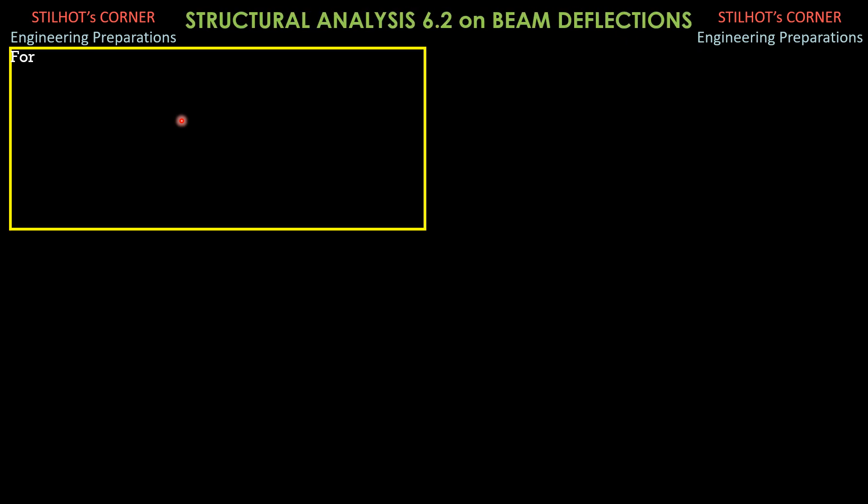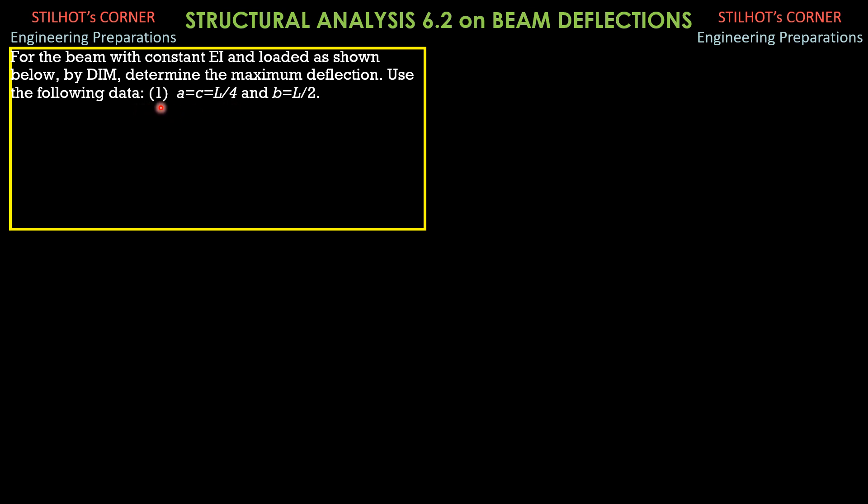Hello, future engineers. Here is another video in structural analysis, particularly in the determination and calculations of deflection in beams. For the beam with constant EI unloaded as shown below by double integration method, determine the maximum deflection and use the following data. A equals C equals L over 4 and B is L over 2.